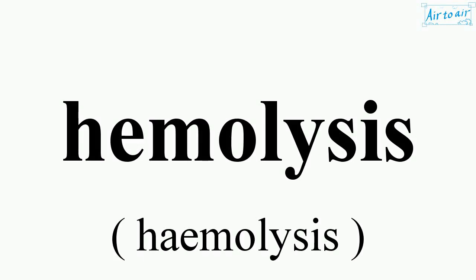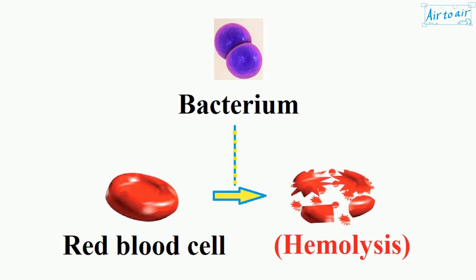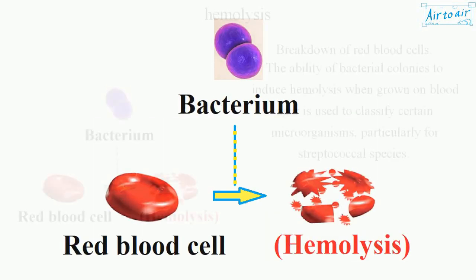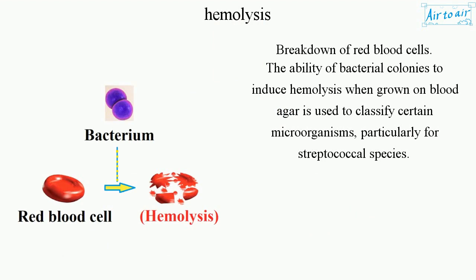Hemolysis is the breakdown of red blood cells. The ability of bacterial colonies to induce hemolysis when grown on blood agar is used to classify certain microorganisms, particularly for streptococcal species.